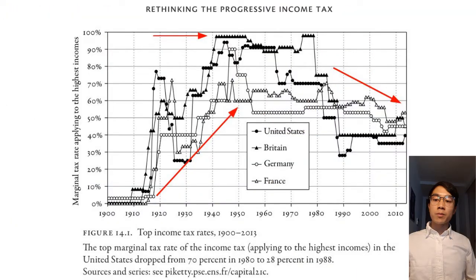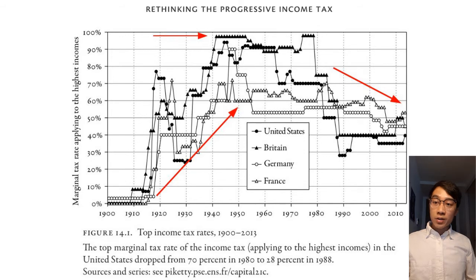The income tax rates from 1900 to 2013 are roughly hill-shaped — that is, they peak around the 1950s to 1980s and then decline from the 1980s onwards. As you can see from this graph, Britain had as high as 98% on its top marginal tax rate, a historical absolute high.